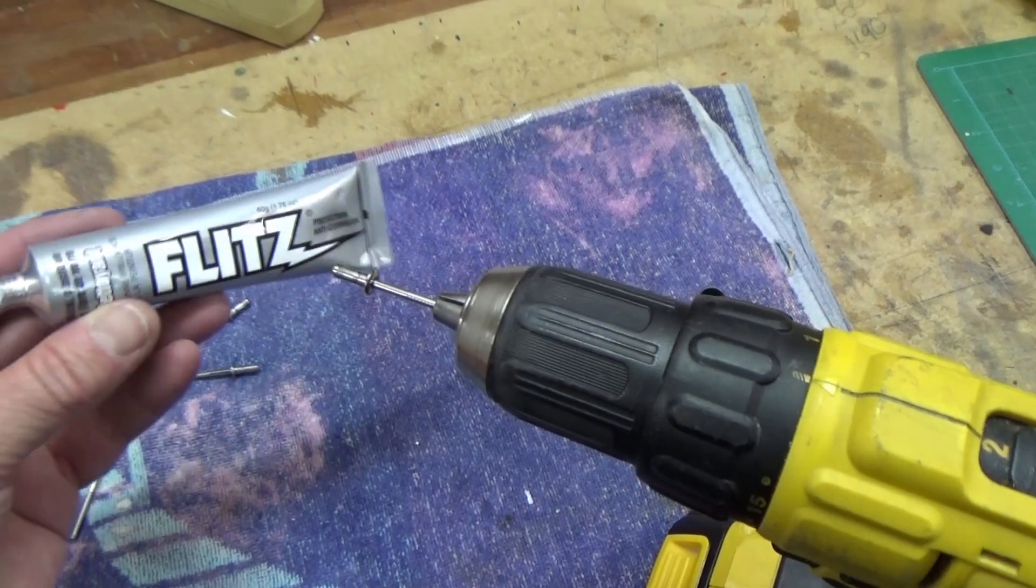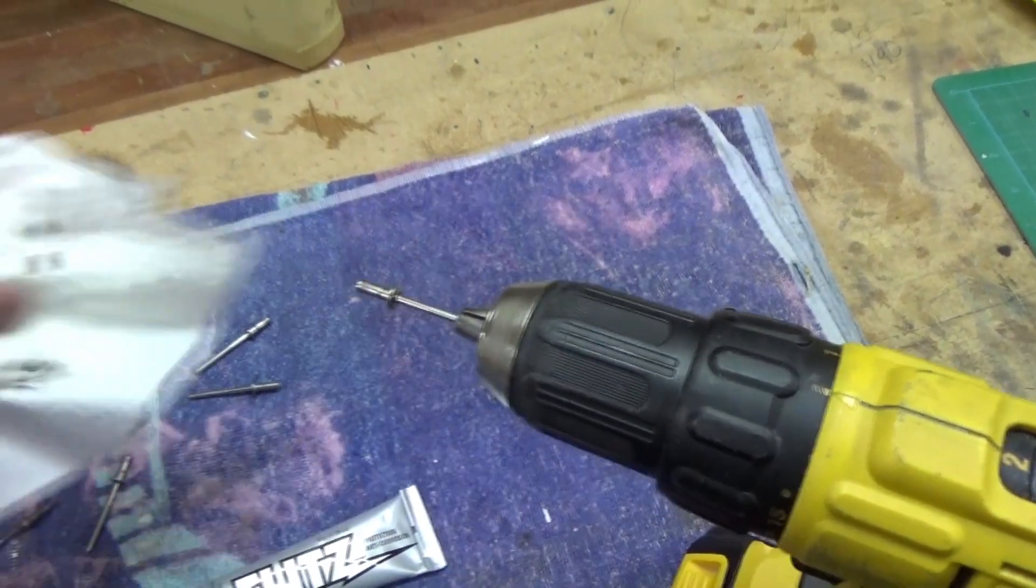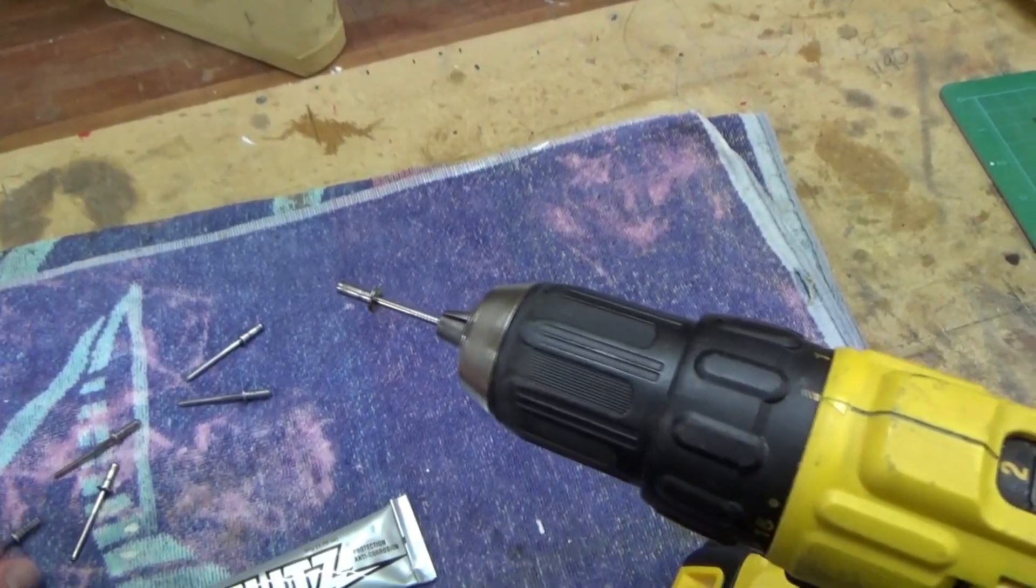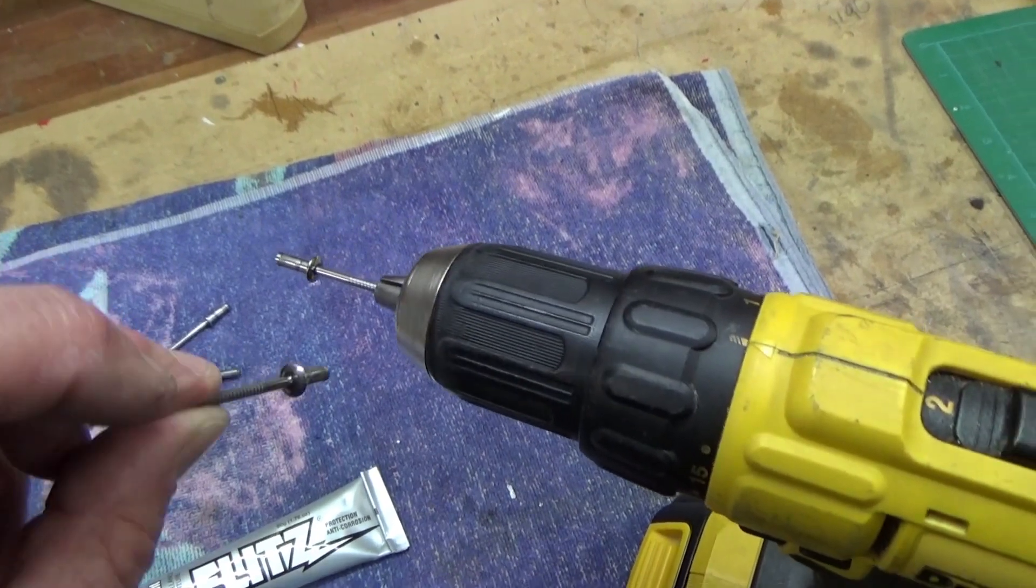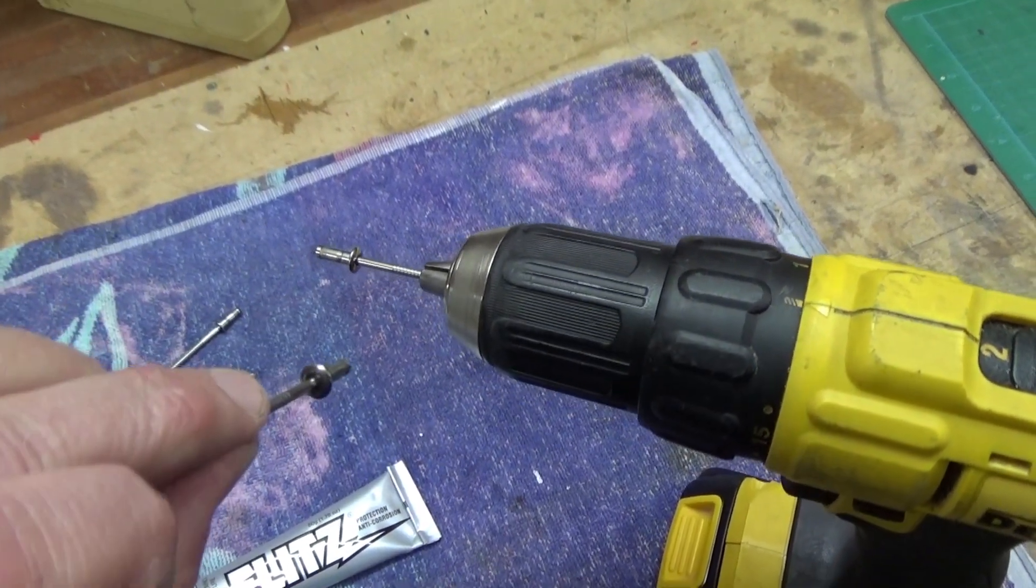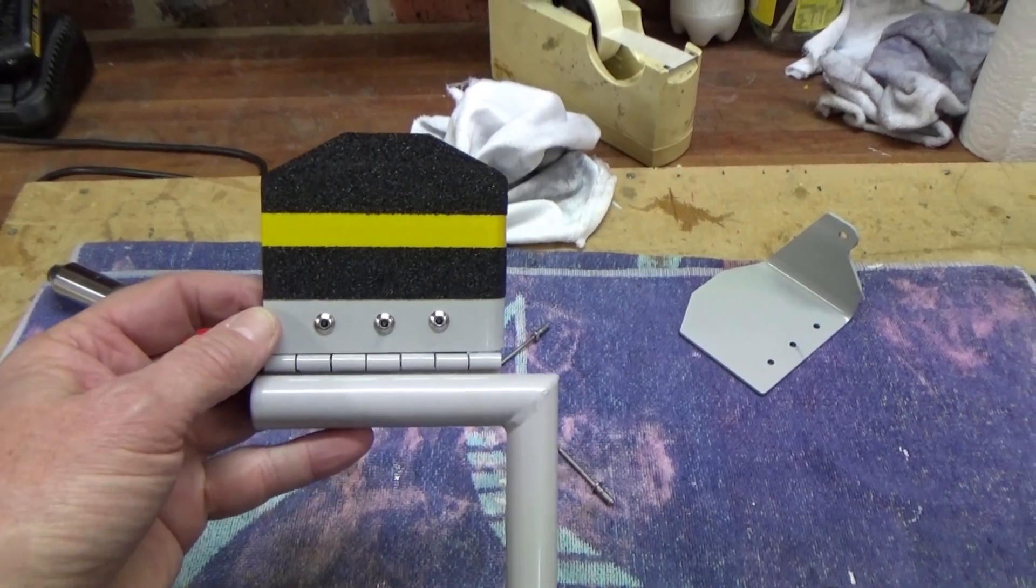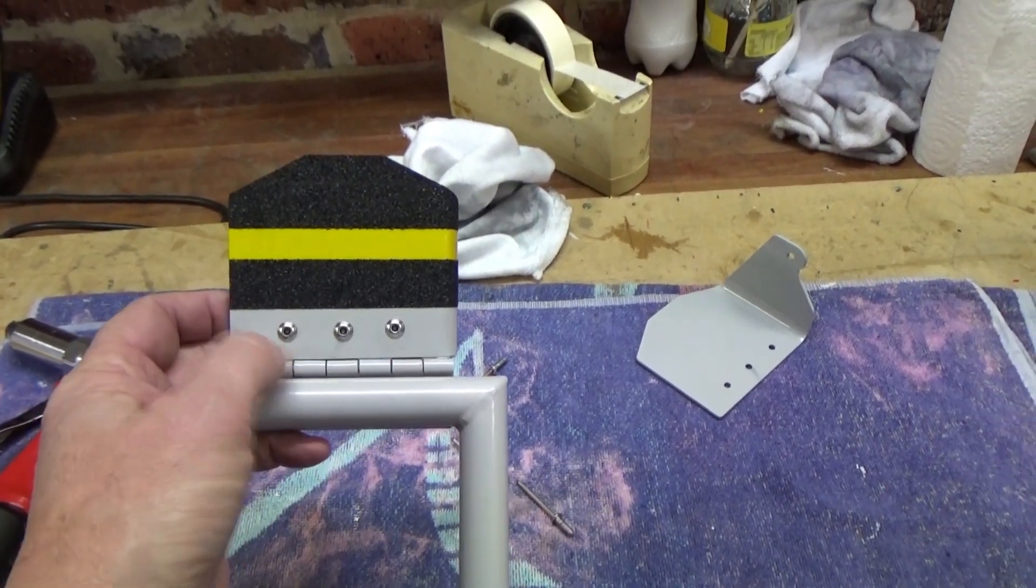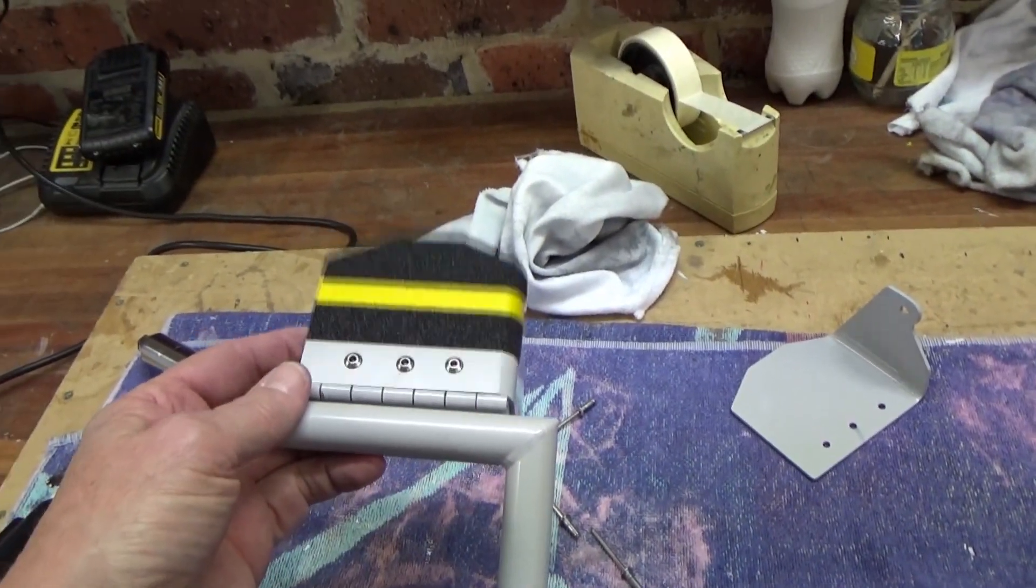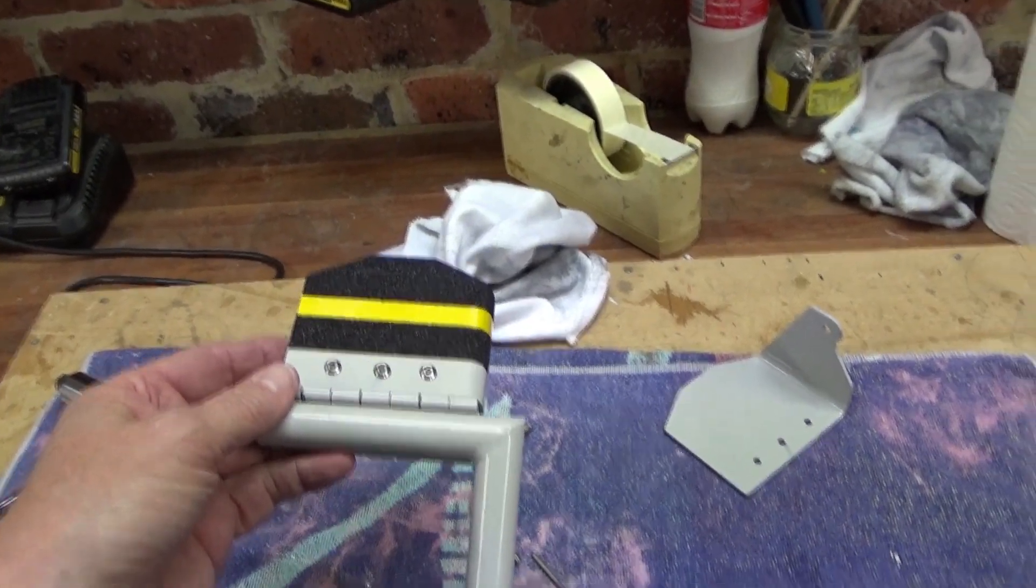A little bit of Flitz on the rag in the drill, put the rivet in the drill, and they polish up nicely. One brake pedal with my three polished up rivets, going well.